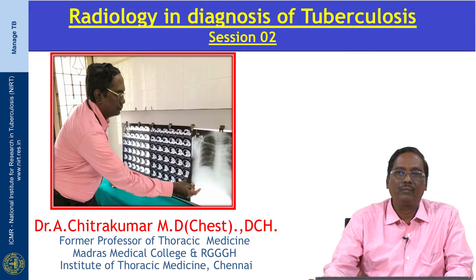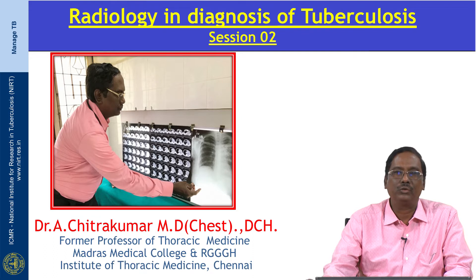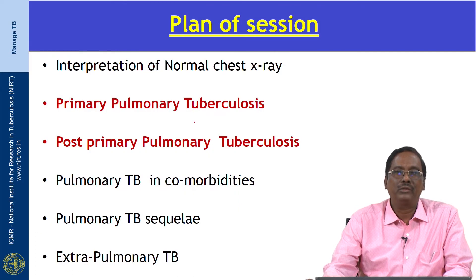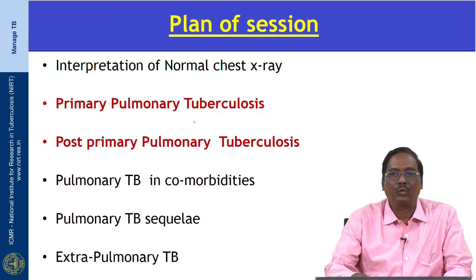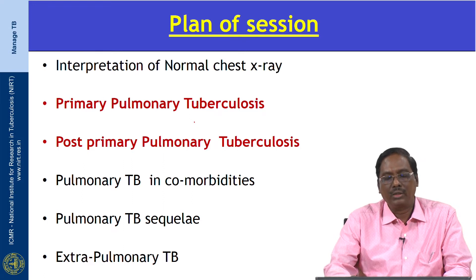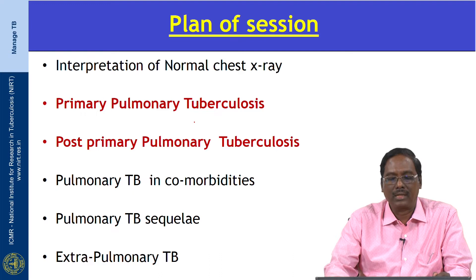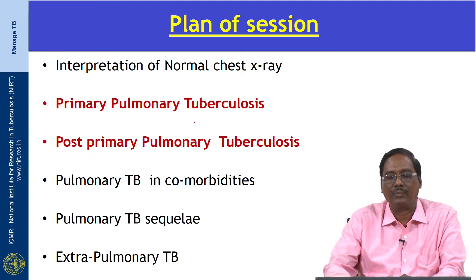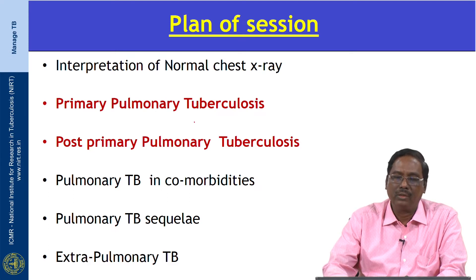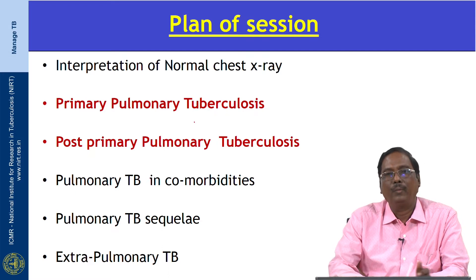Welcome to the next session of Radiology in Diagnosis of Tuberculosis. In this session we are going to discuss about the role of radiology in the diagnosis of pulmonary tuberculosis. Radiological features of pulmonary TB are conventionally divided into primary pulmonary tuberculosis and post-primary pulmonary TB, each with distinct radiological patterns with considerable overlap. The radiological features depend on the age of the patient, underlying immune status, and prior exposure.